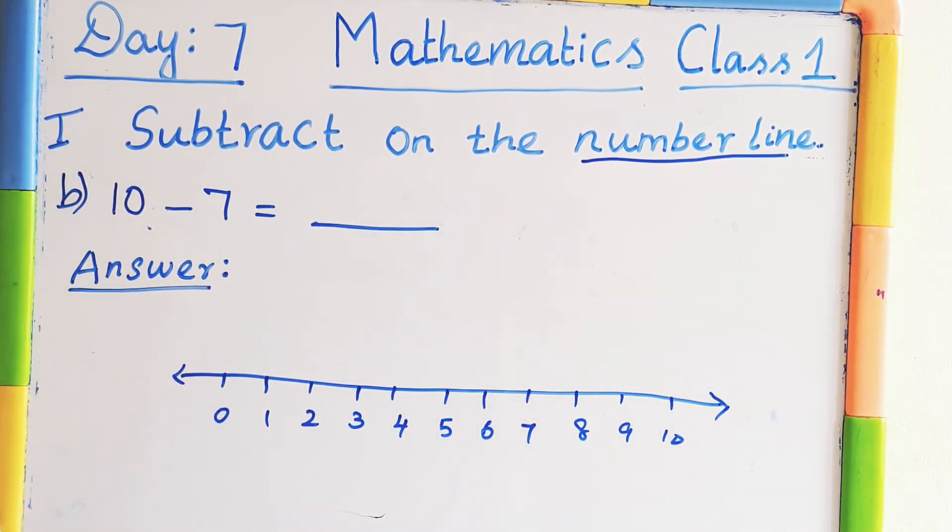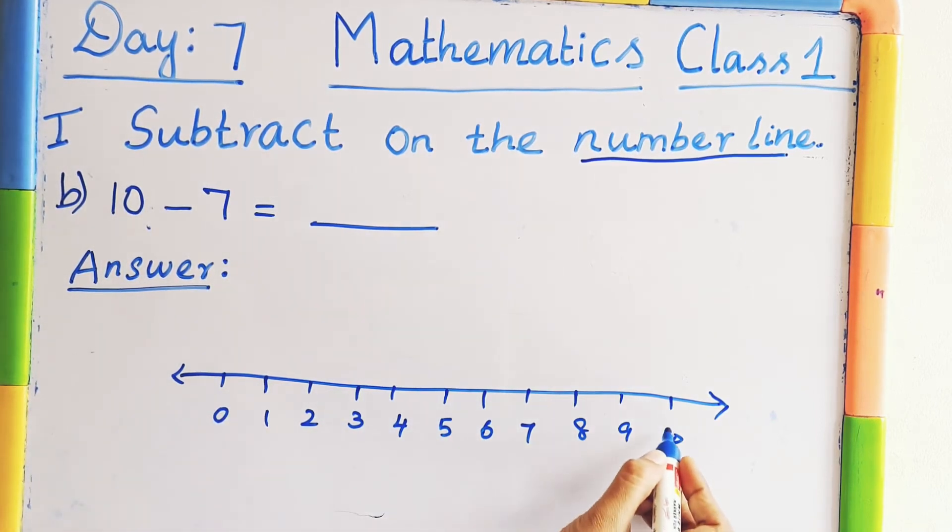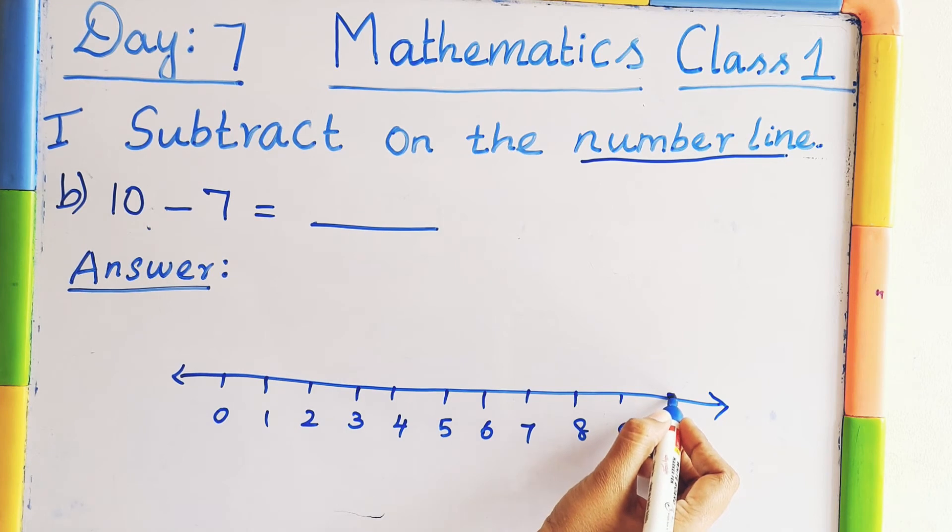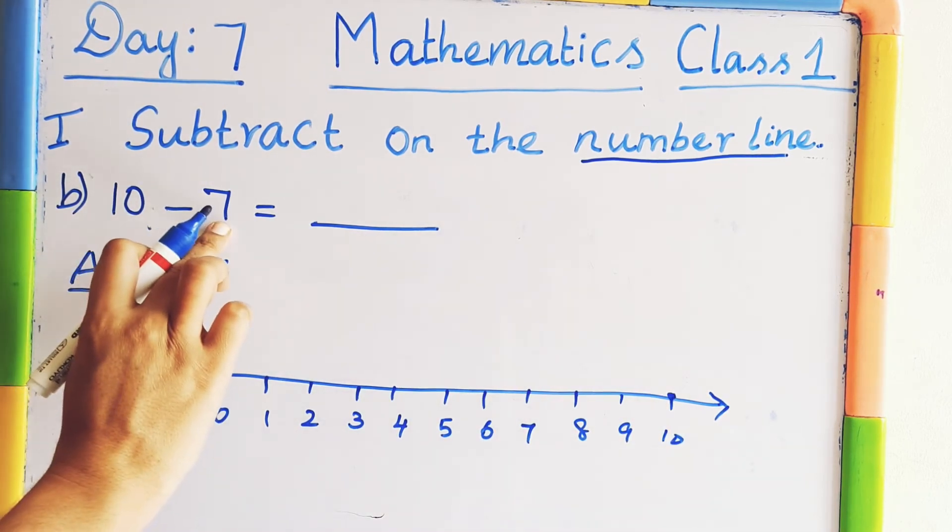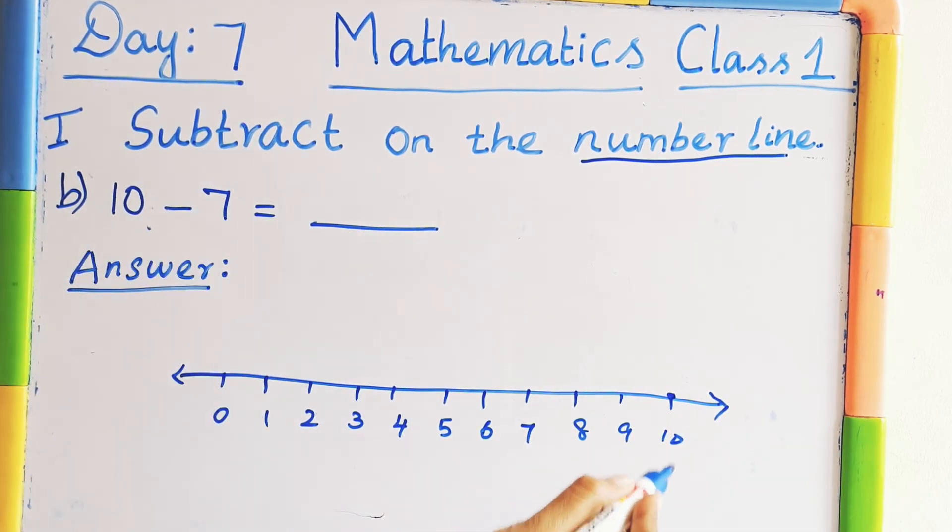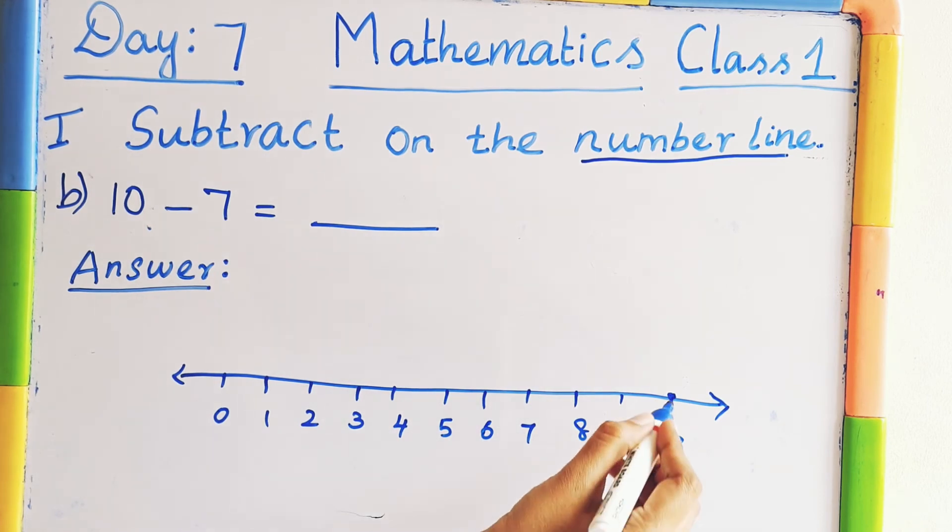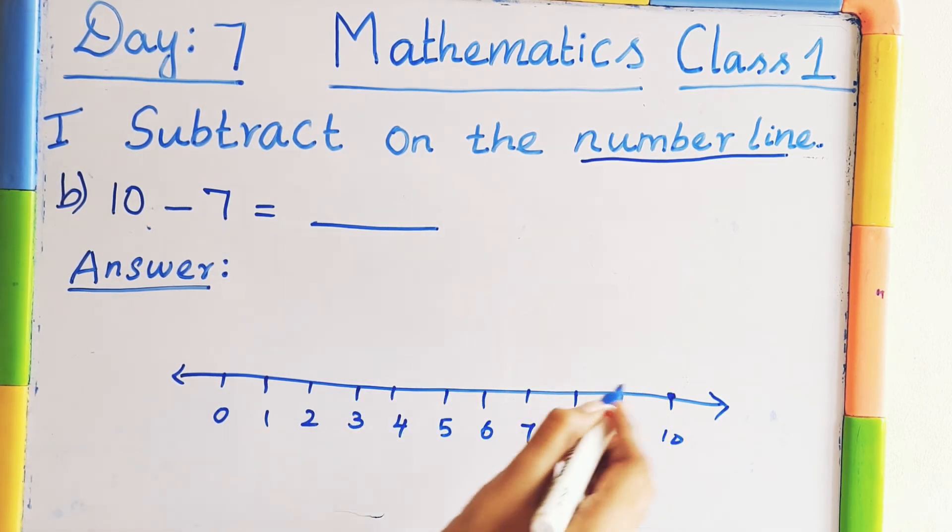The first number is 10. So find out where is 10 here. Where is 10? Here. So mark the number 10. The second number is 7. So write the 7 curves. Okay. Backward you have to draw the curves.